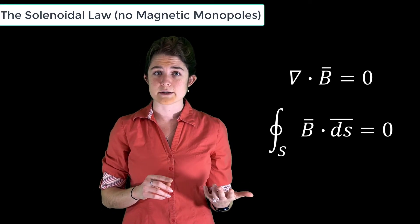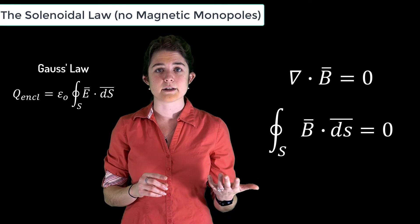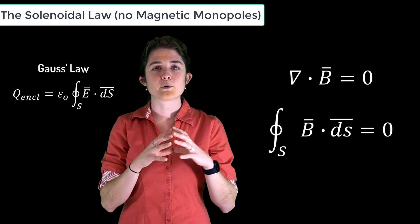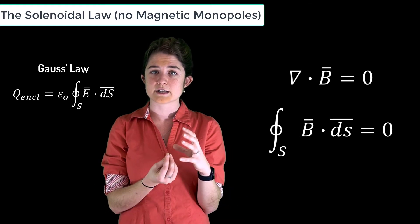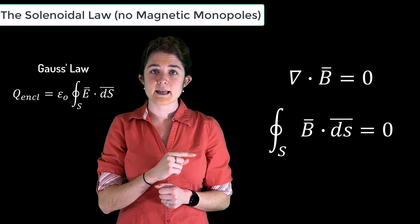So in the electric field case, Gauss's law said that the net electric flux into a volume was proportional to the total electric charge contained by that volume. This says that the net magnetic flux into a volume is always zero.